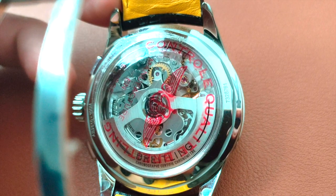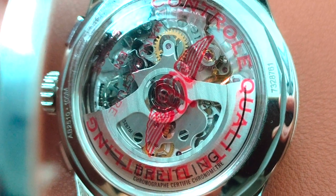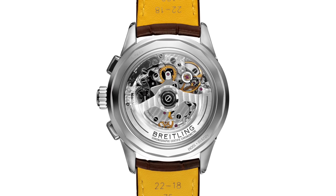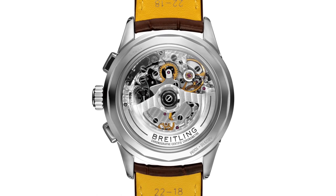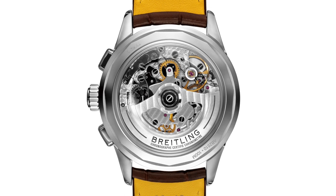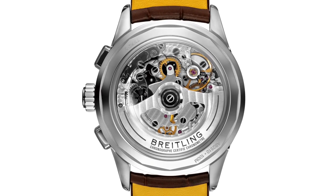The B25 calibre automatic movement here, although machine finish, is still refinely done. It is based on the Concepto 2000 RAC 2822 movement. It has 32 jewels, 28,800 VPH hacking seconds function, it uses a vertical clutch layout with a column view chronograph for the 8 hours of power reserve, and it is COSC certified.